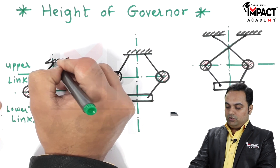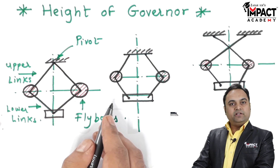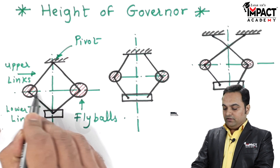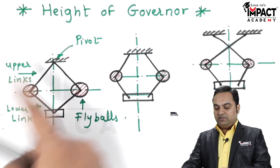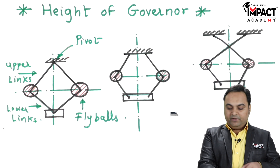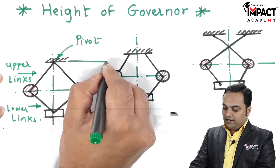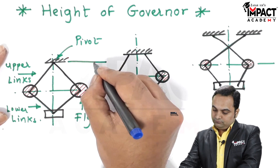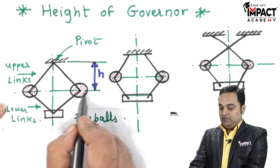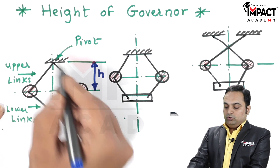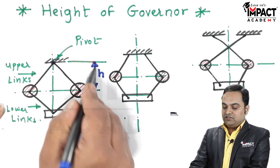The top portion where the links are connected is called as the pivot. Height of governor is the vertical distance between the center of the fly balls and the point at which the upper links are getting intersected. Since they are intersecting in the first diagram at the pivot, the height of governor is denoted by small h — that is from the center of the fly balls to the point at which the upper arms or upper links are intersecting.